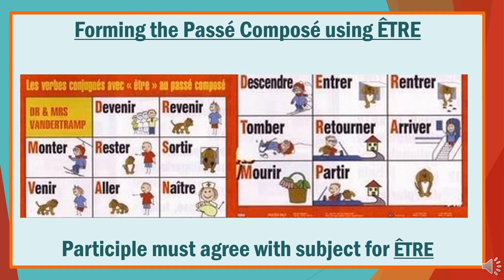Something else you need to know: when forming the passé composé using être, you need to agree the participle with the subject. For a feminine singular subject, the participle takes an extra -e. For any plural subject, the participle takes an extra -s. And if the subject is both feminine and plural, the participle takes both an extra -e and an extra -s. Please note: this happens only when the auxiliary is être — the participle remains unchanged in passé composé using avoir.